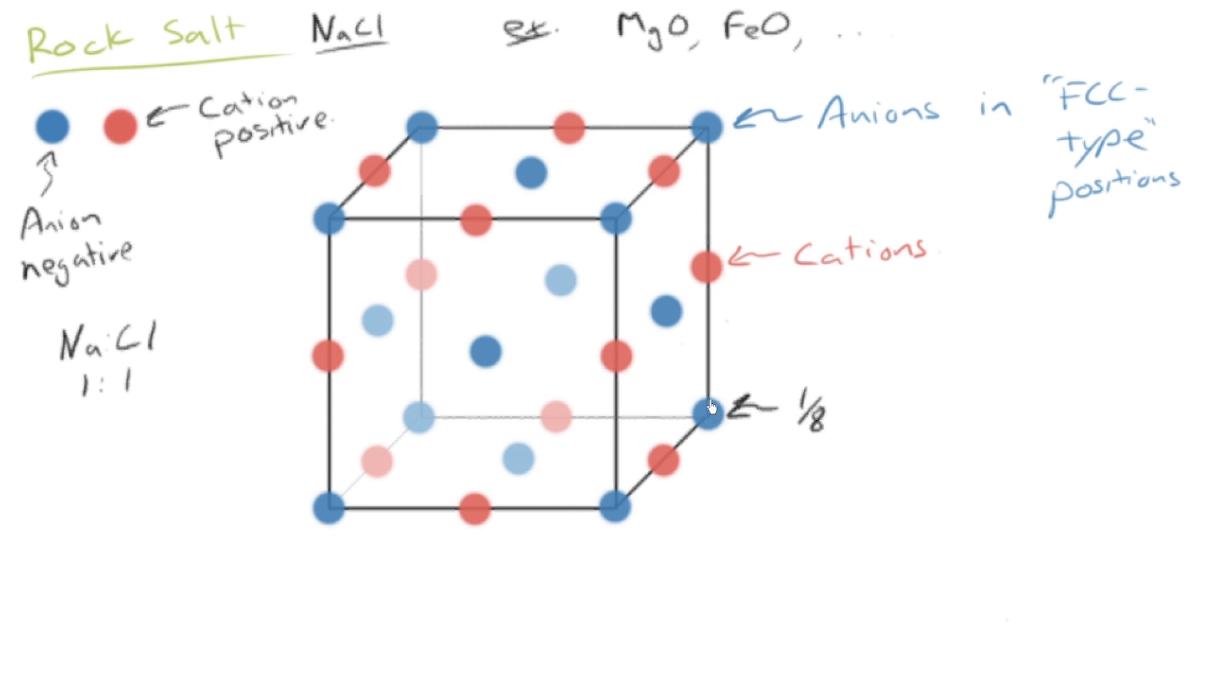But how many anions do we have? We've got an eighth. Remember, that's only one-eighth of an atom inside this unit cell, one-eighth of a sphere, times eight corners is one, plus the faces. There's a half of a sphere inside the unit cell, times six faces, so that's three. You know, we've got four anions.